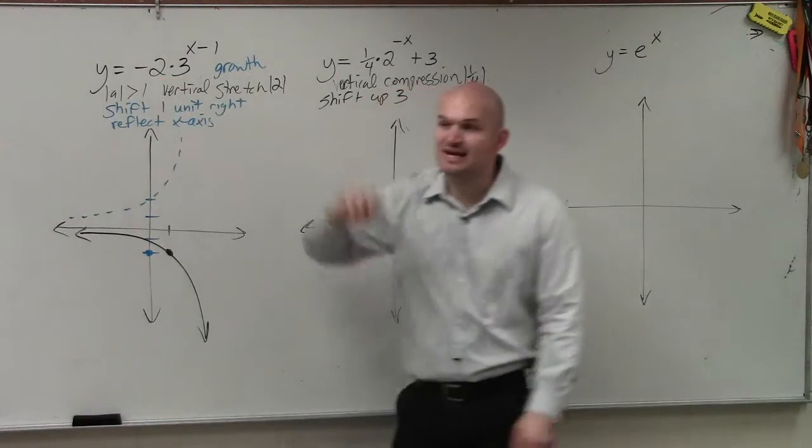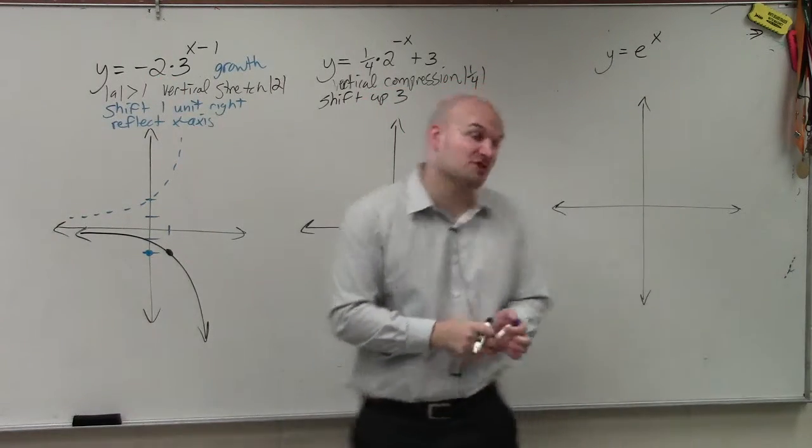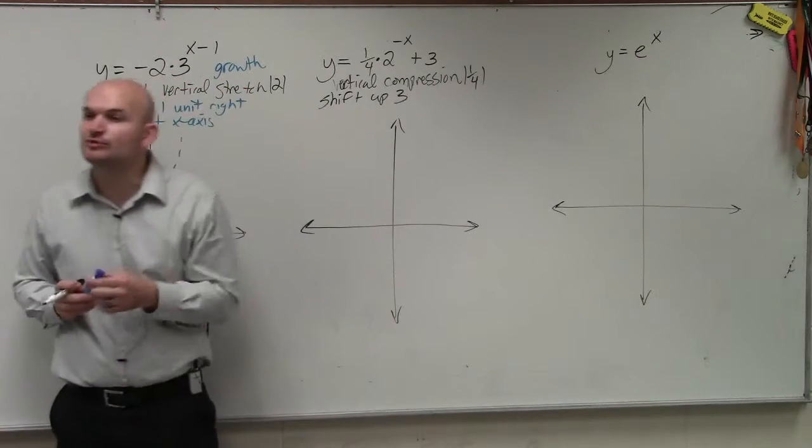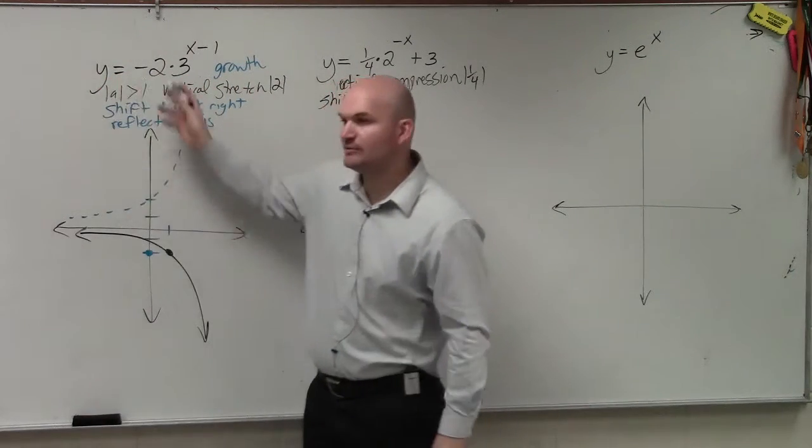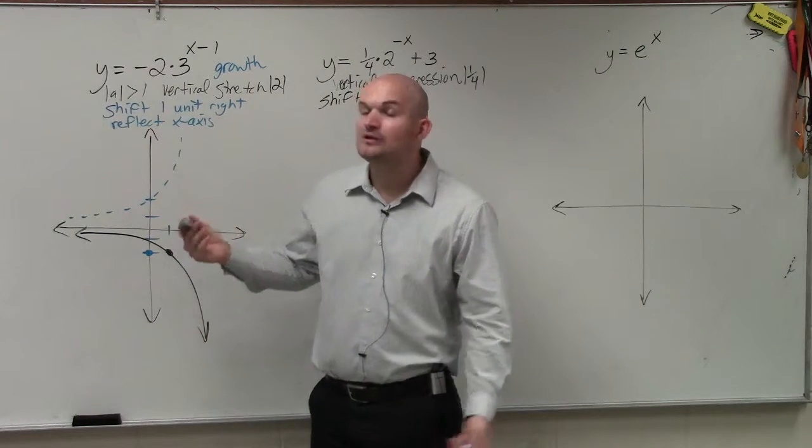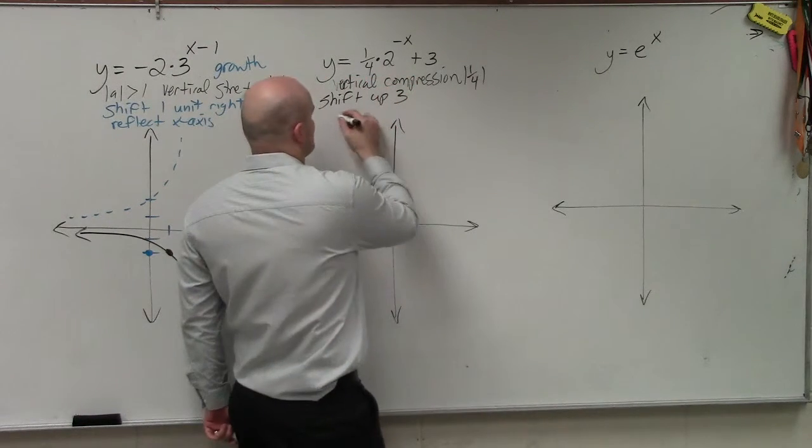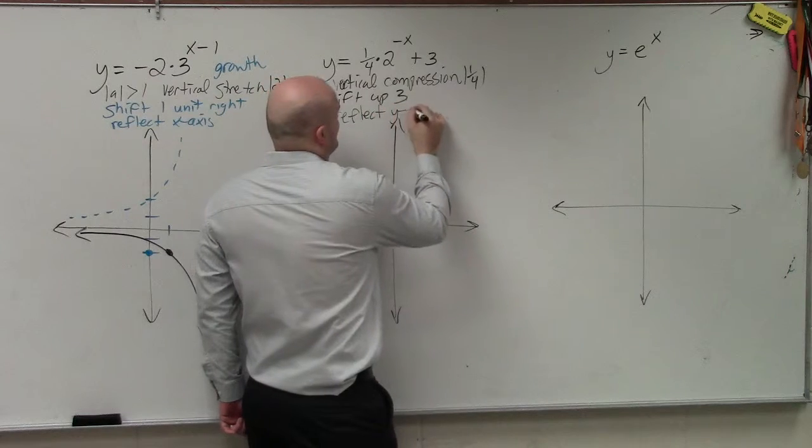So when we multiply it on the outside of the function, it was reflected about the x-axis. So if you're multiplying by a negative on the inside, what do you think you'd reflect? No, over here we've reflected the x-axis. The y-axis. So you're going to reflect the y-axis. Reflect the y-axis.